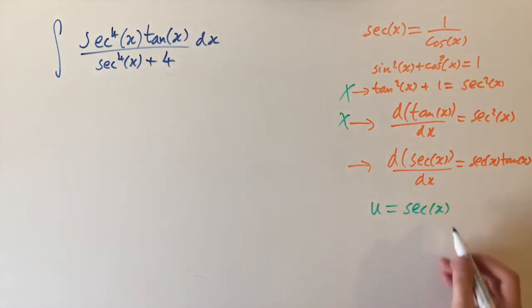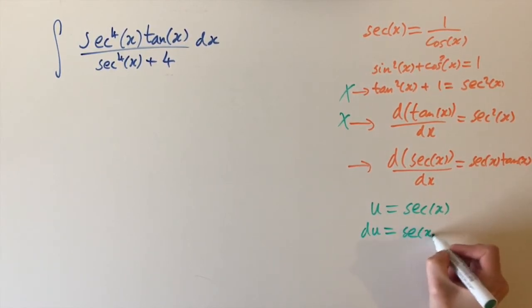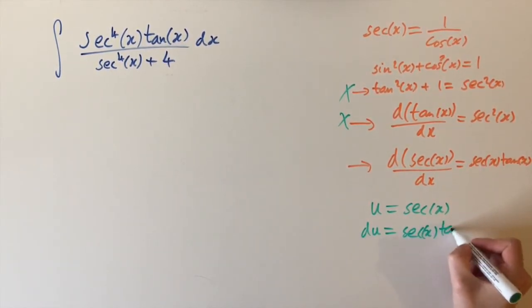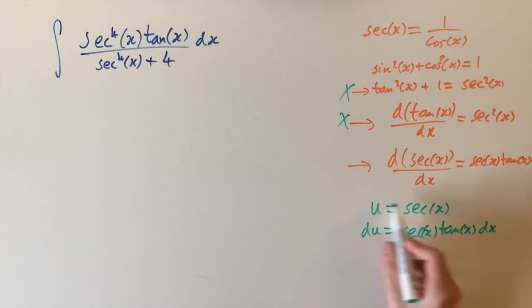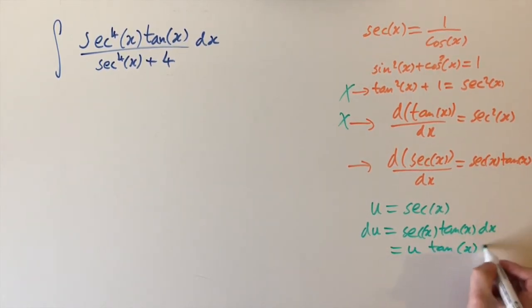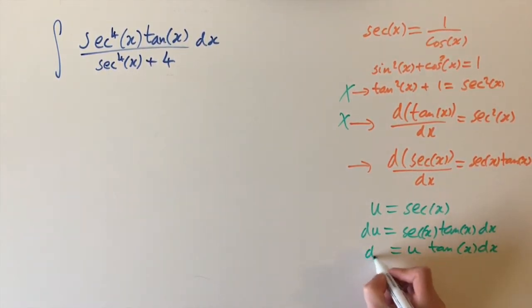So to do the substitution, we need to differentiate this, which is exactly this line. So du equals sec of x times tan of x dx. And what's nice is that sec of x is already defined as u. So we can just write this as u times tan of x dx.